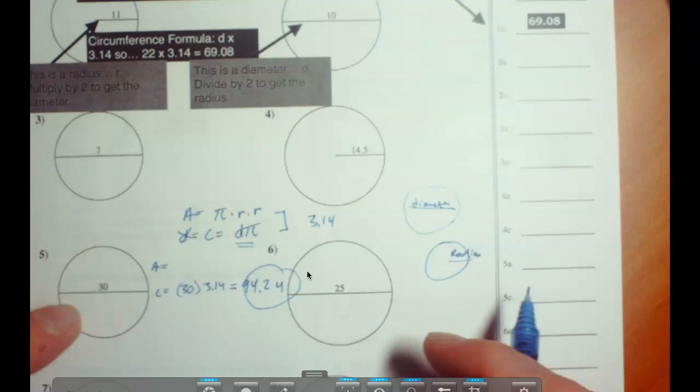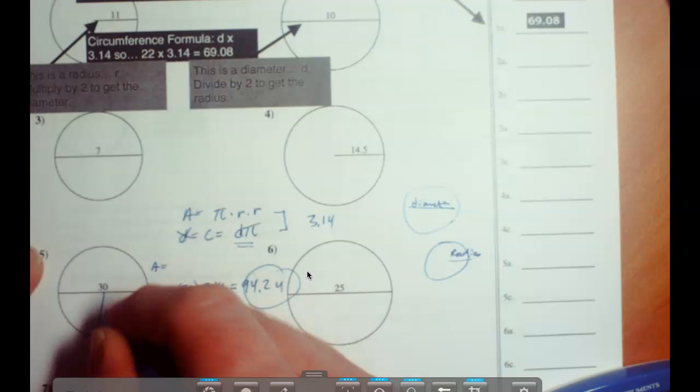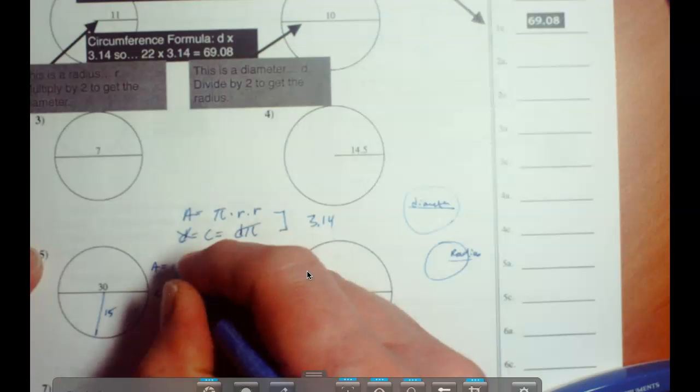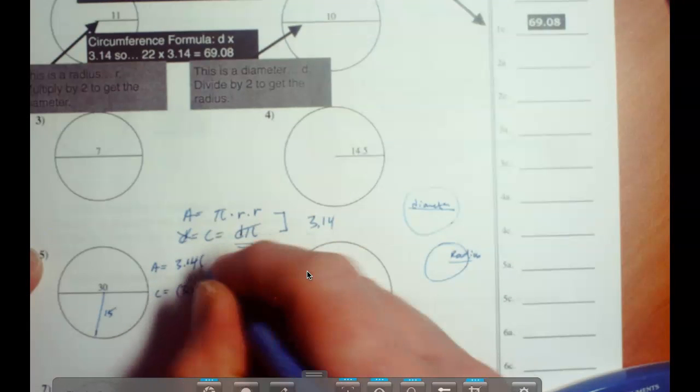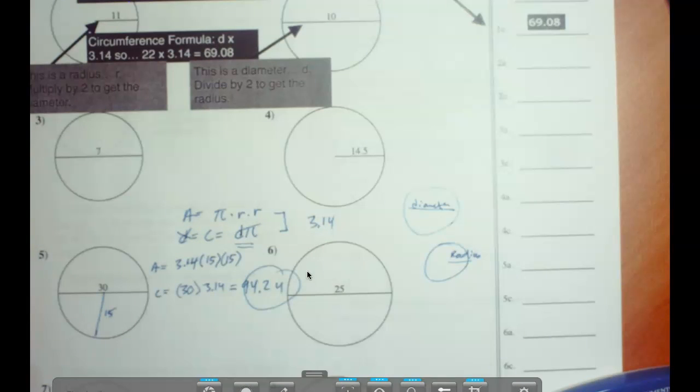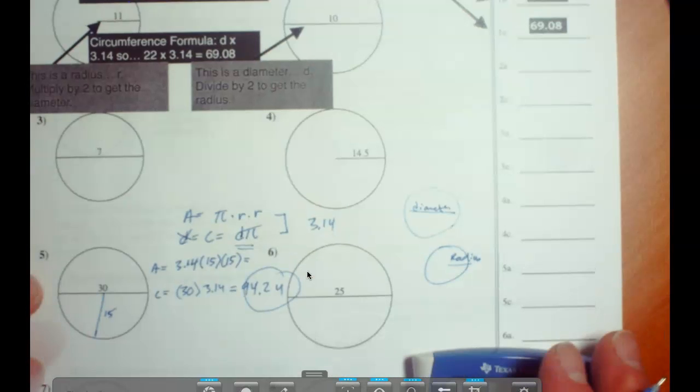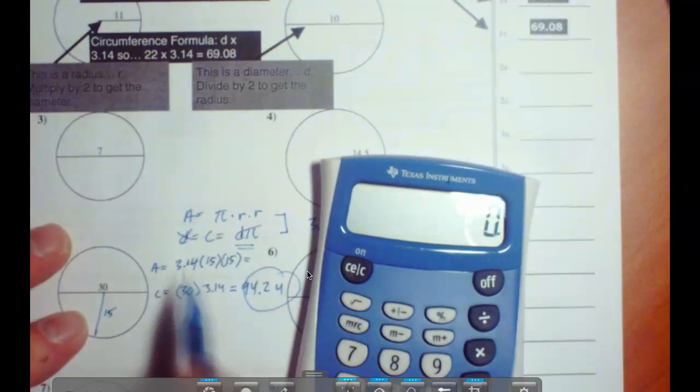Okay, so then the area is going to be pi r r. So if the diameter is 30, then the radius is 15. So this is going to be 3.14 and it'll be times 15 times 15. Notice I'm using brackets because it's a little bit smaller, easier way to write. So 3.14 times 15 times 15. Let me just pop that into it. There it is, pi r r.